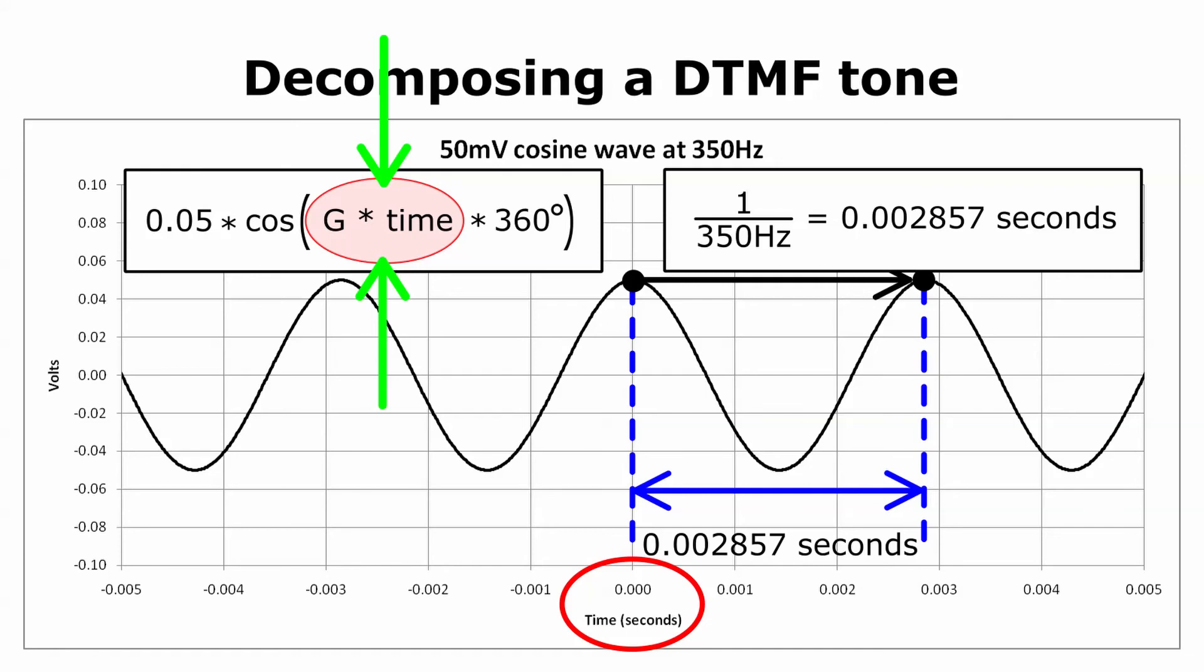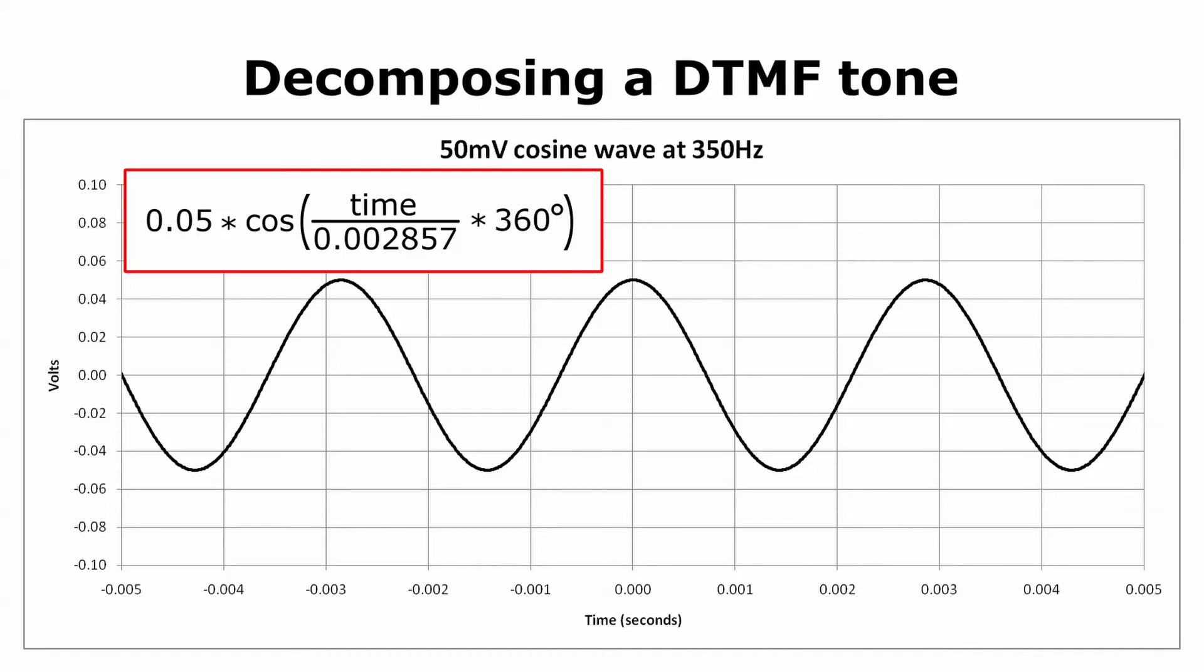We want to set fraction, g, so that, as time progresses from 0 up to 0.002857 seconds, the argument of the cosine goes from 0 to 360 degrees. Here's how we do it. We set fraction, g, equal to 1 divided by the period. This gives us the following equation for the specified waveform. It alternates sinusoidally with an amplitude of 50 millivolts, and it has a period of 0.002857 seconds, which is equivalent to a frequency of 350 hertz.